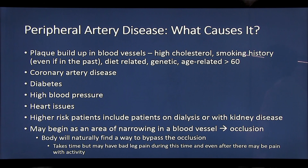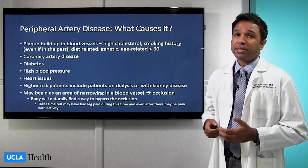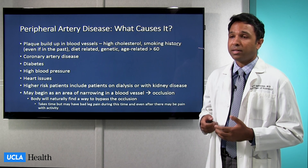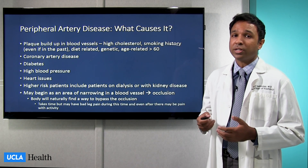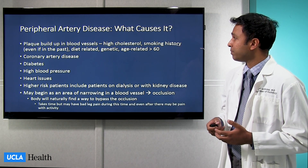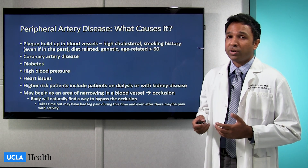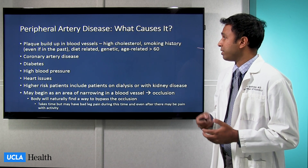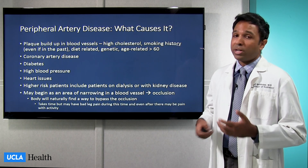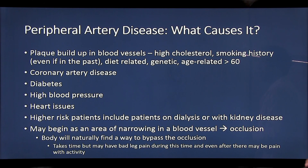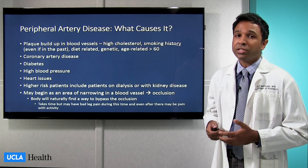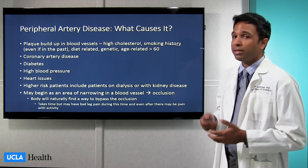Plaque buildup can happen in blood vessels for a variety of reasons. Typically this relates to lifestyle factors such as diet — if you had a diet high in cholesterol or high in fatty content, you're more likely to develop plaques within your blood vessels. A history of smoking, including if it was in the past, also puts you at increased risk. Genetic factors, including a family history of peripheral artery disease, also increase your risk. As you get older, you are also at increased risk of having PAD. Heart disease, diabetes, and high blood pressure are also contributing factors. Patients who are on dialysis or who have kidney disease are also at greater risk of having peripheral artery disease.